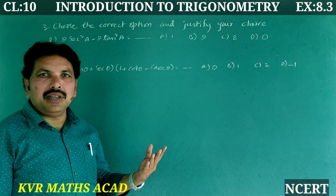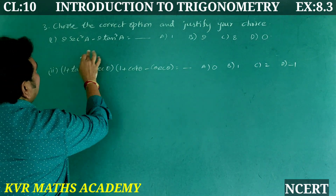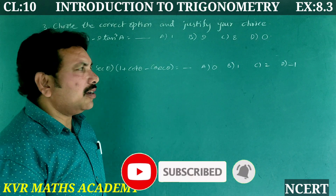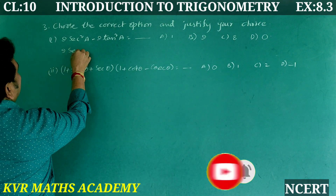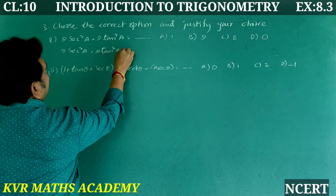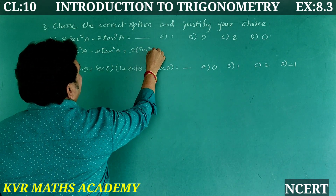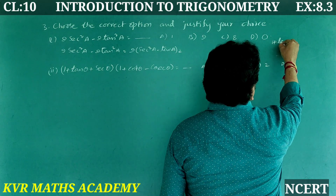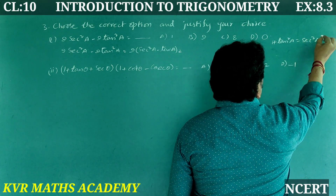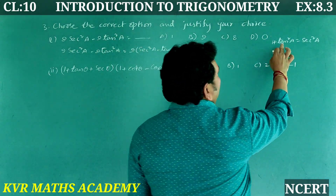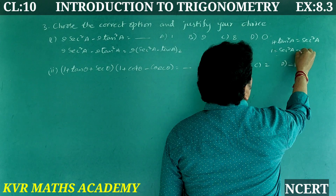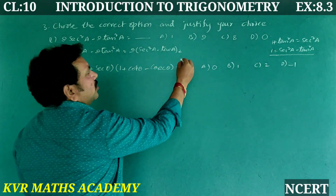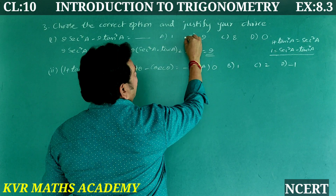First one: 9 sec²A − 9 tan²A is equal to — options: (a) 1, (b) 9, (c) 8, (d) 0. Solution: take 9 common, giving 9(sec²A − tan²A). Using the second trigonometric identity, 1 + tan²A = sec²A, so sec²A − tan²A = 1. Substituting, 9 × 1 = 9. So option (b) 9 is the correct answer.